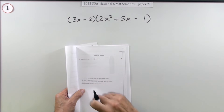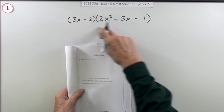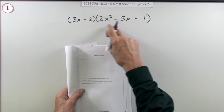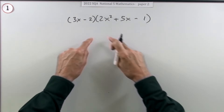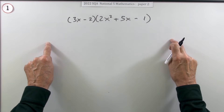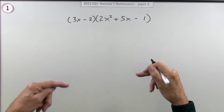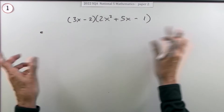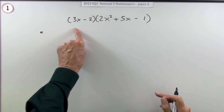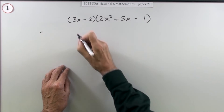Number one: the first question in the 2022 National 5 Paper 2, three marks — expand and simplify this expression involving the product of two brackets. According to the marking scheme, if you just write down the correct answer you'll get three out of three, but you shouldn't really do that because you're taking a chance with the mental gymnastics. You're as well setting out some of it at least.